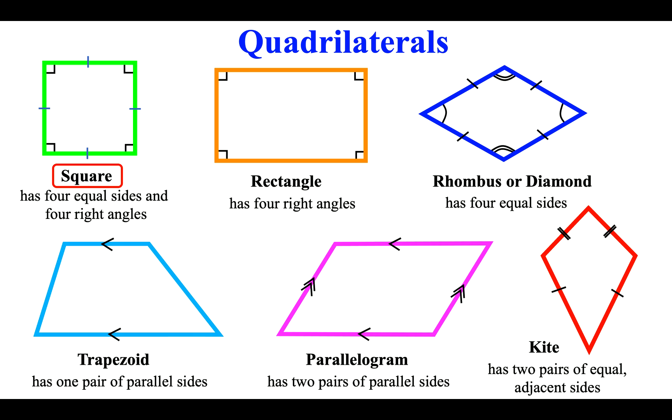Quadrilaterals: Square has four equal sides and four right angles. Rectangle has four right angles. Rhombus or diamond has four equal sides. Trapezoid has one pair of parallel sides. Parallelogram has two pairs of parallel sides. Kite has two pairs of equal adjacent sides.